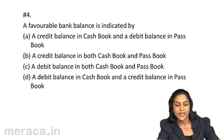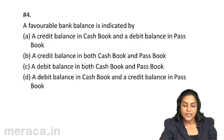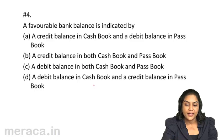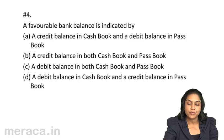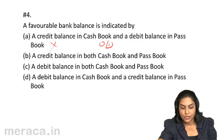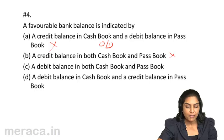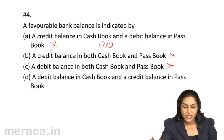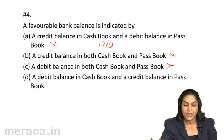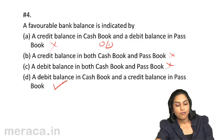A favorable bank balance — where your deposits are more than withdrawals — is indicated by a debit balance in the cash book and a credit balance in the pass book. A credit balance in the cash book actually indicates an overdraft, not a favorable balance. If one has a credit balance, the other has a debit balance, so a debit balance in the cash book and a credit balance in the pass book is the favorable balance. Therefore, D should be right.